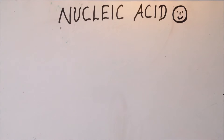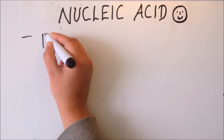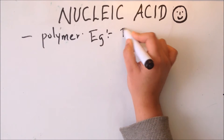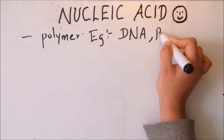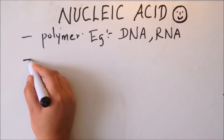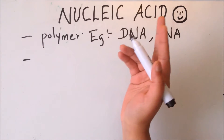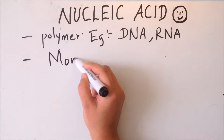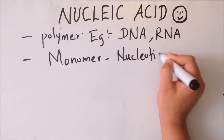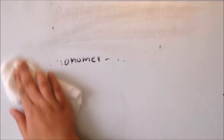In today's video I'm going to talk about nucleic acids. Nucleic acid is a polymer - examples are DNA and RNA. Since it is a polymer, it should have a monomer. Just like proteins have amino acids as the monomer, for nucleic acids the monomer is called a nucleotide.